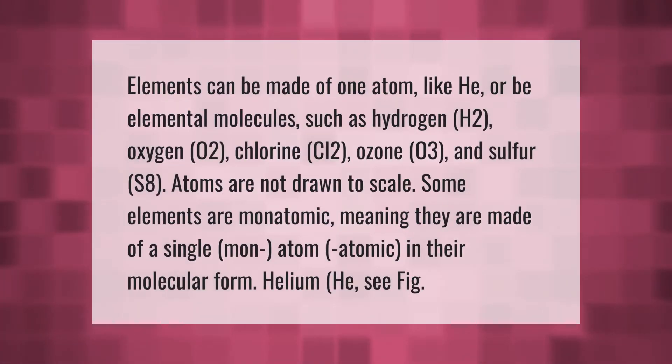Elements can be made of one atom, like He, or be elemental molecules such as hydrogen (H2), oxygen (O2), chlorine (Cl2), ozone (O3), and sulfur (S8). Atoms are not drawn to scale. Some elements are monatomic, meaning they are made of a single (mon-) atom (-atomic) in their molecular form.